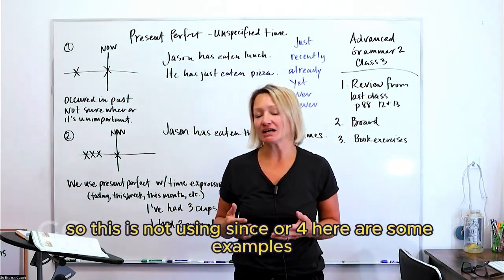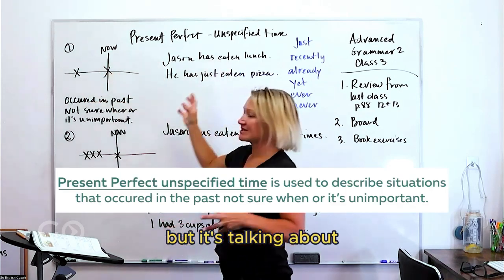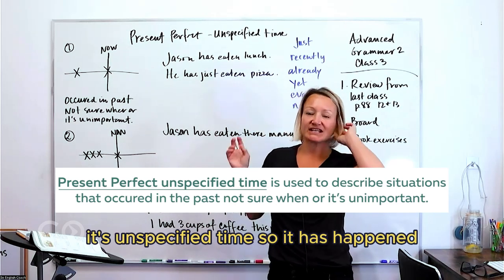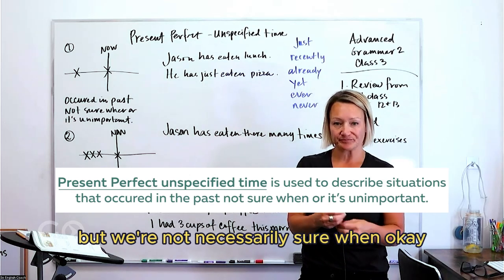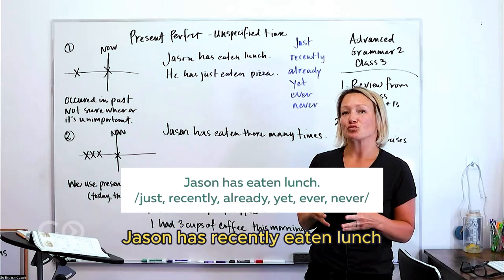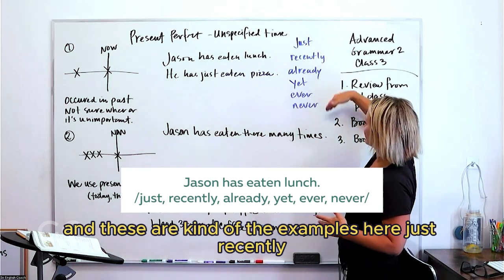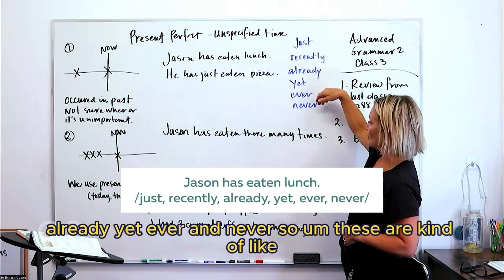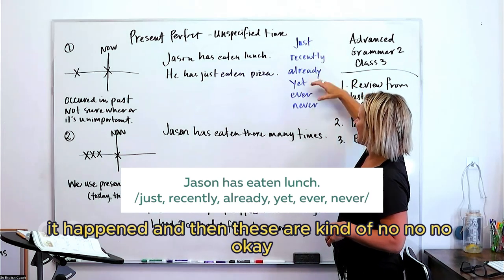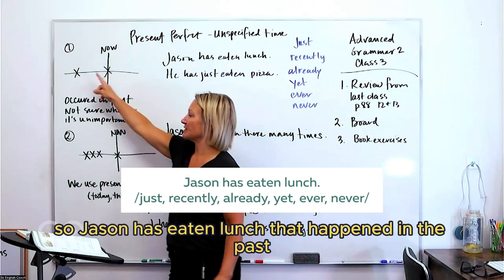What we've got here is another way we use the present perfect — not using 'since' or 'for.' Here are some examples. Number one: something that happened in the past at an unspecified time. So it has happened but we're not necessarily sure when. The example is 'Jason has eaten lunch.' You can say: 'Jason has already eaten lunch,' 'Jason has recently eaten lunch,' 'Jason has just eaten lunch.' The key adverbs here are: just, recently, already, yet, ever, and never.